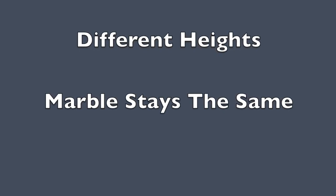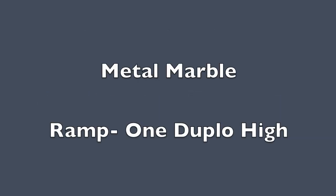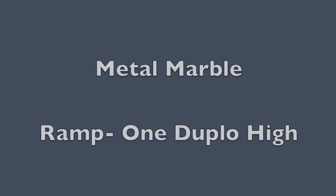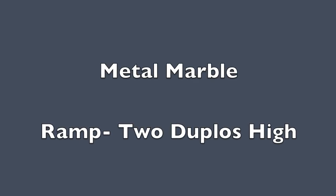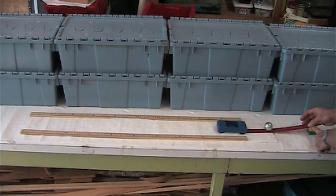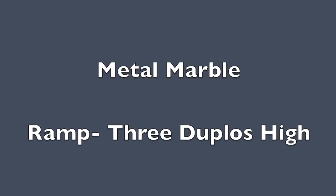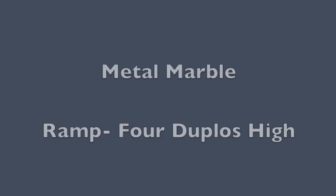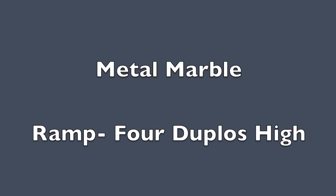Now we are going to change the heights of the ramp — the marble is going to stay the same. Let's look at the metal marble. The ramp is one Duplo high. The same metal marble, the ramp is now two Duplos high. The same metal marble, the ramp is now three Duplos high. We are going to finish with the metal marble — the ramp is now four Duplos high.